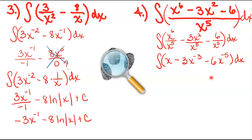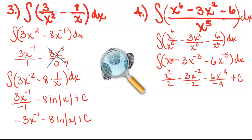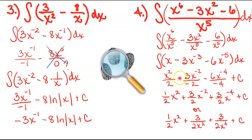I have not done the antiderivative yet — all I've done is algebraic simplification. So now we can do our antiderivative. The exponent on x is 1, so add 1 to get x to the 2nd, divide by that same number. Add 1 to negative 3 — that's negative 2 — divide by that same number. Add 1 to negative 5 — that's negative 4 — divide by that same number. Then we've got our arbitrary constant. We can clean it up a little bit: a negative divided by a negative is a positive.